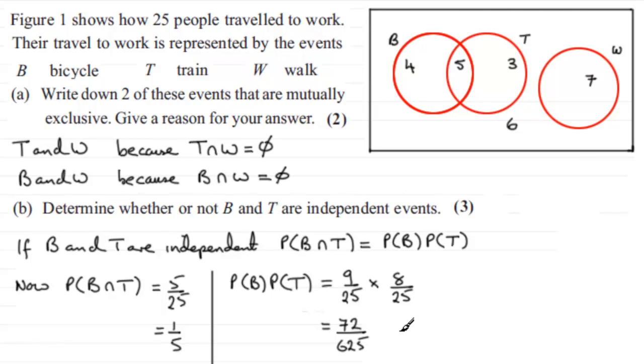So clearly, because these two probabilities are not the same, we can say that therefore B and T are not independent. And that's certainly one way of going about this particular problem.